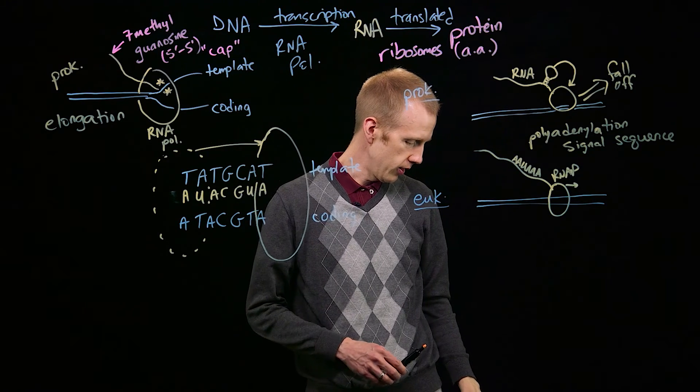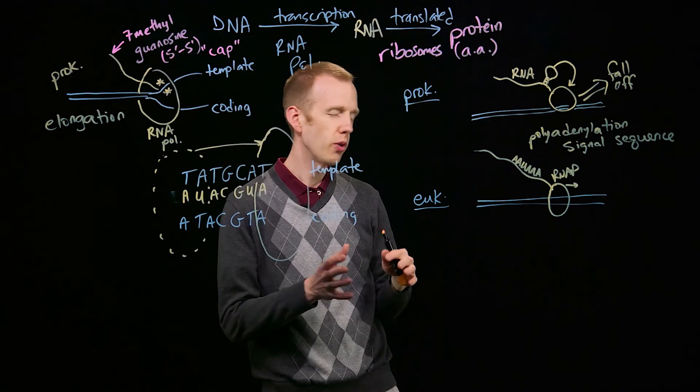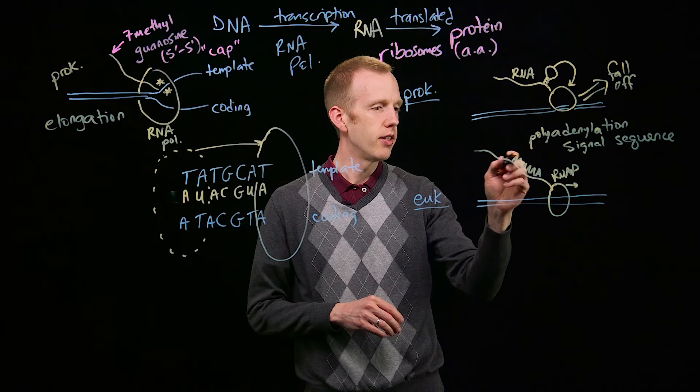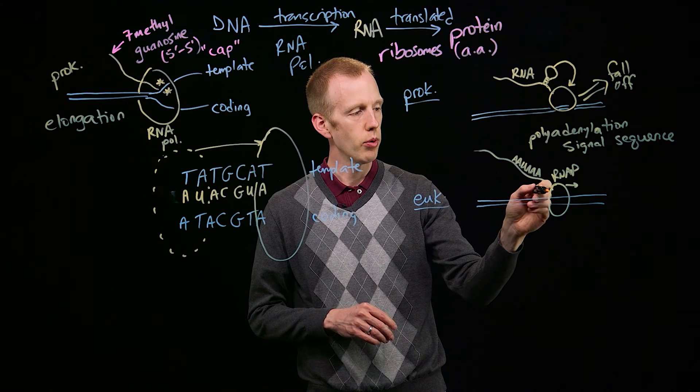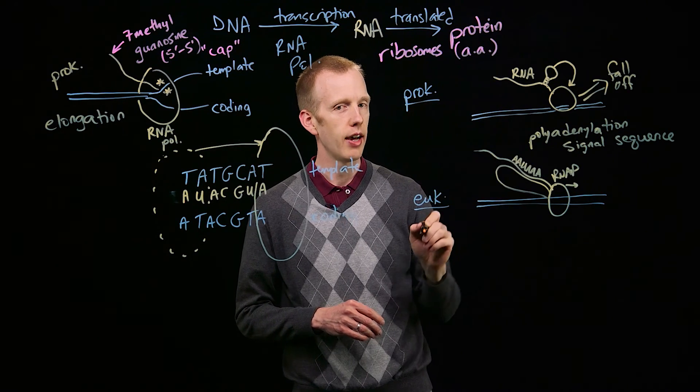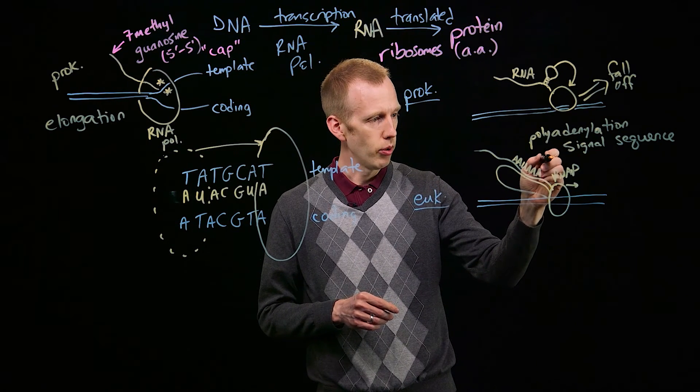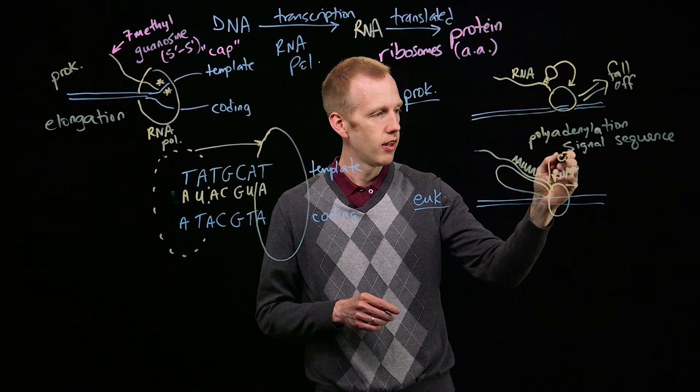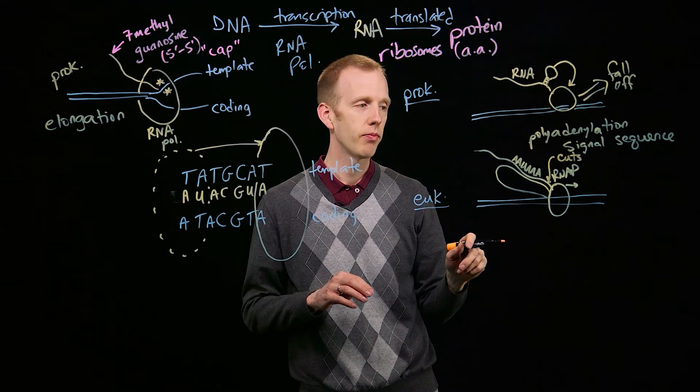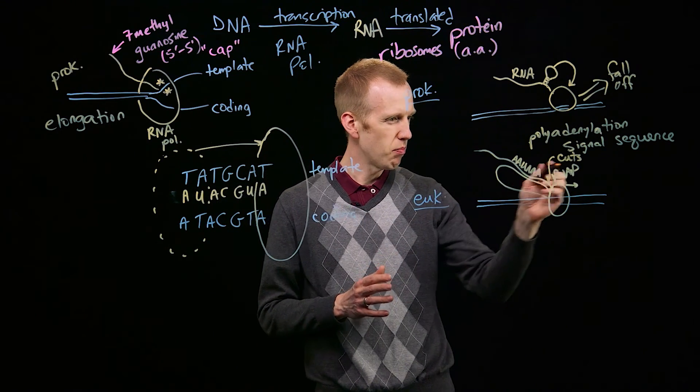What that does is it's located about 200 or 300 base pairs upstream of the very end of the transcript. This sequence gets recognized by another protein that's associated with RNA polymerase. When that protein reads that sequence in the RNA molecule, AAUAAA, a different protein comes in and cuts the transcript off of RNA polymerase.